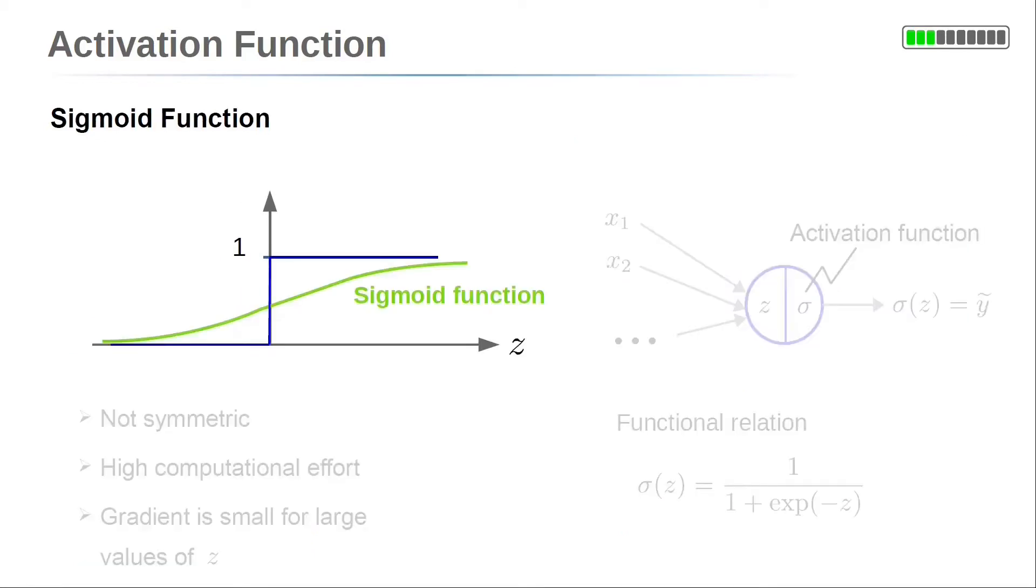A continuous version of a step function can be, for example, the sigmoid function we've seen before. For large positive values, it converges to one. For large negative values, it converges to zero. In between, it has a smooth transition.